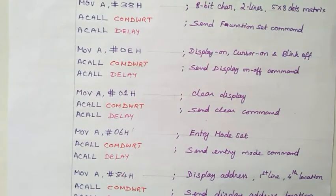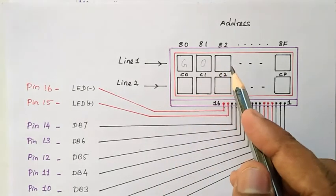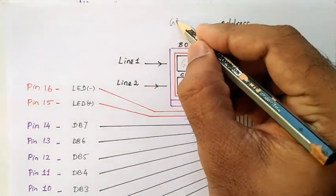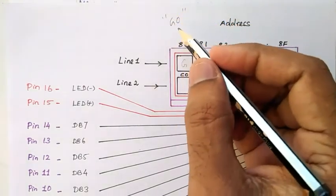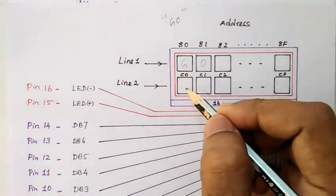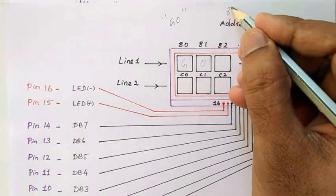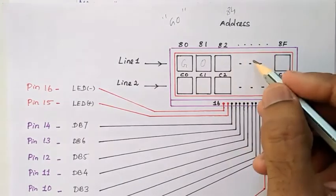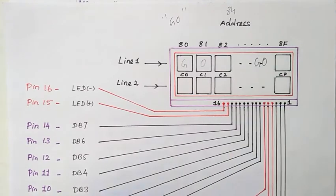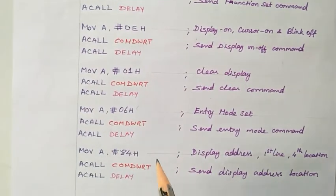The last initialization code is 0x84, which is the position where the text will be displayed. In our example, we are printing 'GO'. We decide where to start printing — in the first line at the first location or somewhere in the second line. Here I am deciding to print from address 0x84, meaning positions 80, 81, 82, 83, 84. That is where the 'GO' text will be printed, and we give the address command for this.